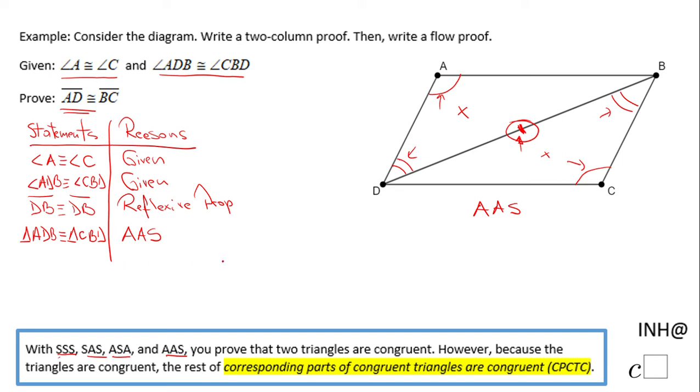Now, because these two triangles are congruent, the rest of the parts of the triangles are congruent. So I'm going to say here: AD congruent to BC, which is the final statement. The reason is corresponding parts of congruent triangles are congruent. And that's it - this is the two-column proof for this problem.